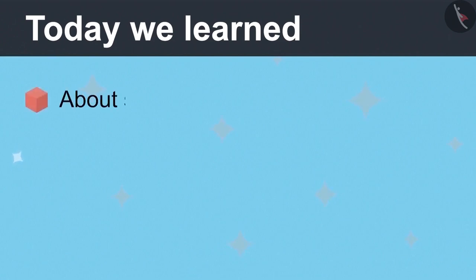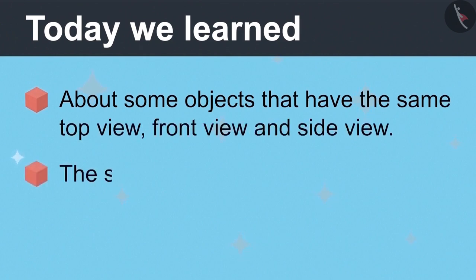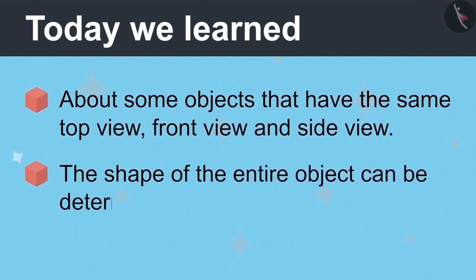Neha and Vandana have now understood that there are some objects that look the same from all sides. That's why the top view, front view and the side view of those objects are the same. And the shape of the entire object can be determined from just three views.